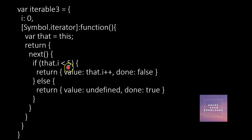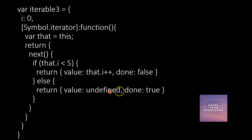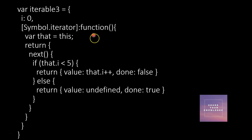The condition is: till i reaches 5, we send the current value and done as false. Once it goes beyond 5, we say there are no more values by returning value undefined and done true. Once the for loop receives this, it stops the loop. So to make an object iterable: two conditions — setting Symbol.iterator to a function which returns an iterator object.